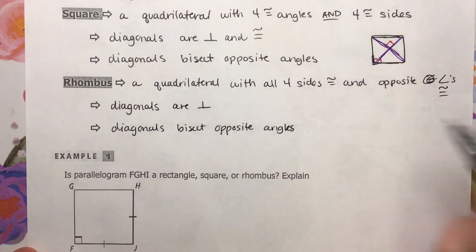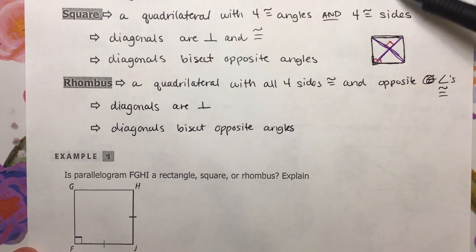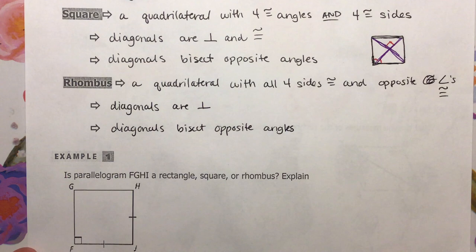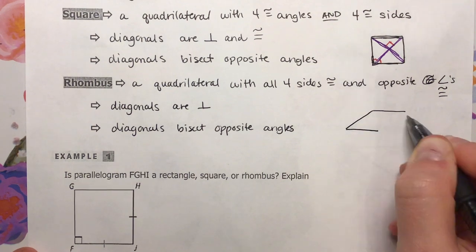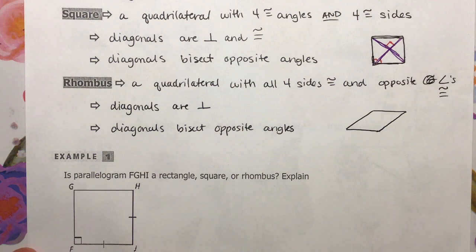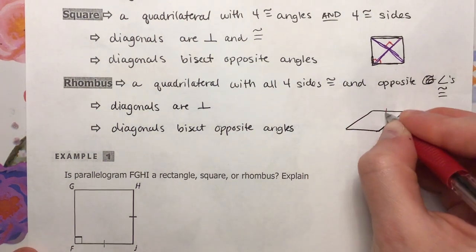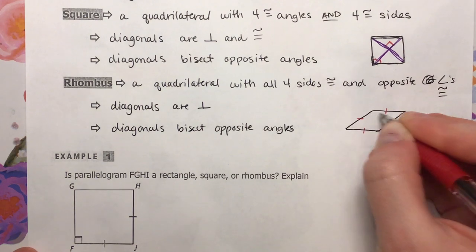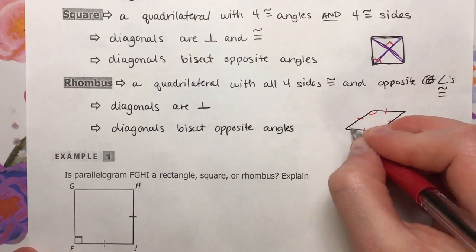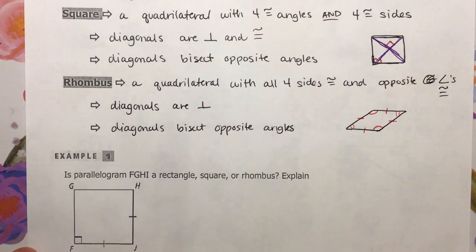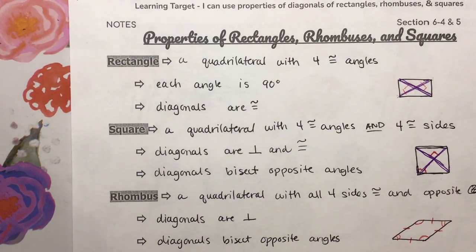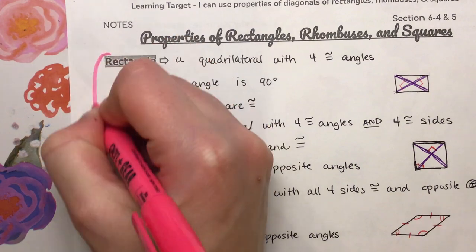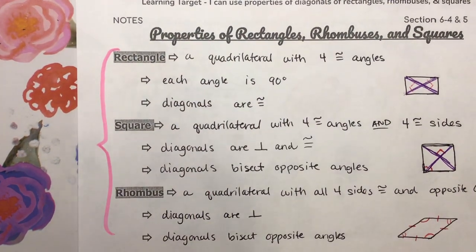This is very similar to the idea that every square is a rectangle, but not every rectangle is a square — and so on and so forth. That works the same with a rhombus. So this would be an example of what a rhombus might look like. I need all four sides to be congruent, and opposite angles are congruent to each other. A rectangle, a square, and a rhombus are essentially special types of parallelograms — just special parallelograms.